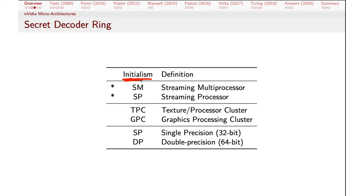Worth noting: these are not acronyms, they're initialisms — an acronym is an initialism that forms a pronounceable word. So SM, SP, and so on are initialisms. The streaming multiprocessor is a collection of streaming processors. Those streaming multiprocessors are also clustered together in larger units on the chip: the TPC, which stands for texture/processor cluster, and GPC, which stands for graphics processing cluster. These are really just larger groupings of streaming multiprocessors, which are themselves groupings of streaming processors.